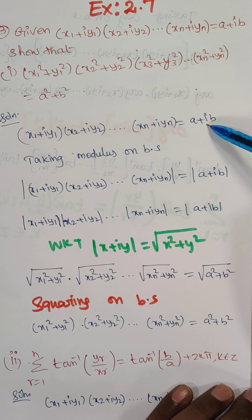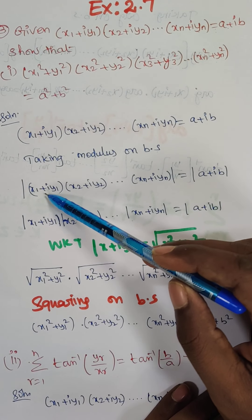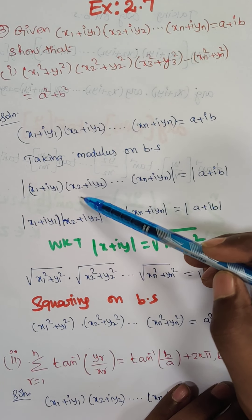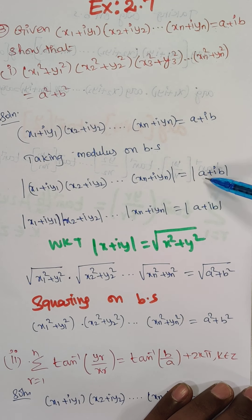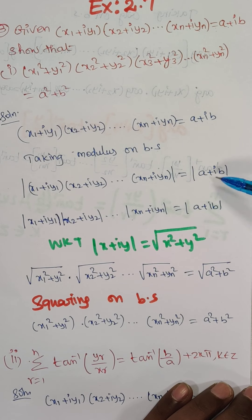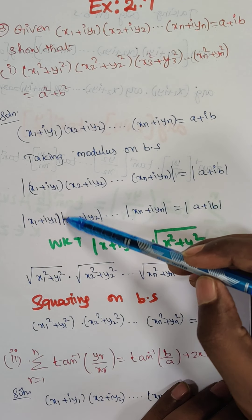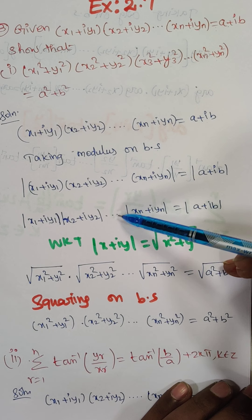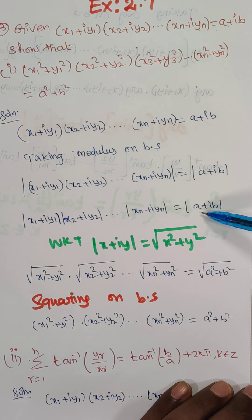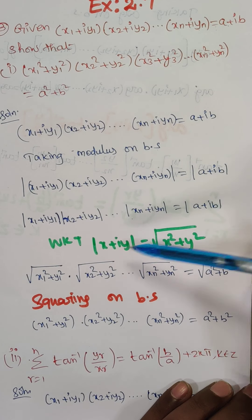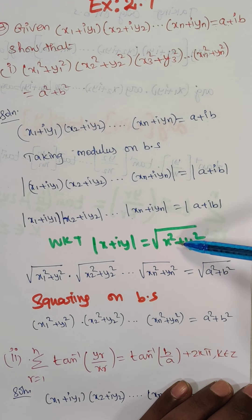First, I am going to take the modulus on both sides: |x1 + iy1| · |x2 + iy2| · ... · |xn + iyn| = |a + ib|. Now I am going to split this modulus: |x1 + iy1| · |x2 + iy2| · ... · |xn + iyn| = |a + ib|. We already know the formula: |x + iy| = √(x² + y²).